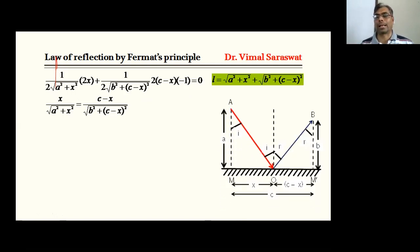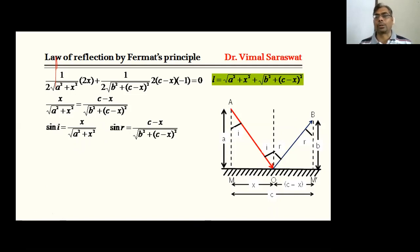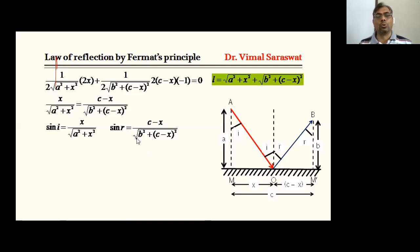Now from our diagram and from geometry, in triangle MAO, sin I = perpendicular / hypotenuse = MO / AO = x / √(a² + x²). Similarly, in the other triangle, sin R = (c − x) / √(b² + (c − x)²). Substituting these values into our equation gives sin I = sin R, and therefore I = R.